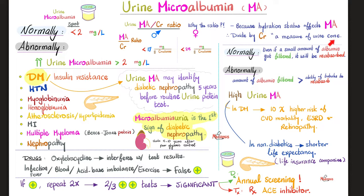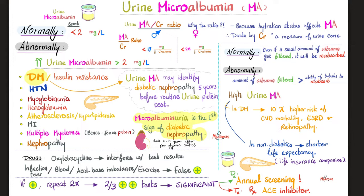Why creatinine? Because creatinine is a measure of your urine concentration. This ratio in males should be less than 17 mg of microalbumin per gram of creatinine. In females, it should be less than 25 mg. Males have a lower ratio because they have greater muscle mass, which means more creatinine, and creatinine is in the denominator — so if creatinine goes up, the ratio goes down. Males have more creatinine because of greater muscle mass from higher testosterone on average. Under normal conditions, even if a tiny amount of albumin is filtered through the glomerulus, the tubules will reabsorb it back into the blood. Problems arise when large amounts of albumin are filtered, exceeding the tubules' reabsorptive capacity, resulting in albuminuria or microalbuminuria.